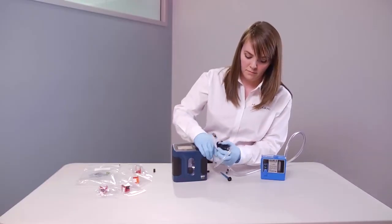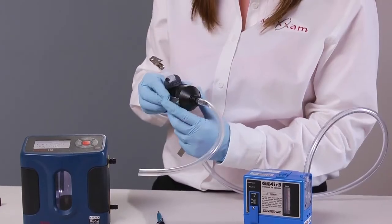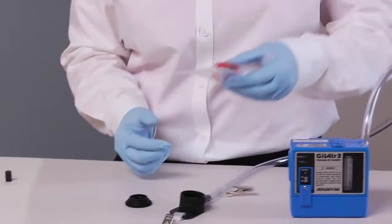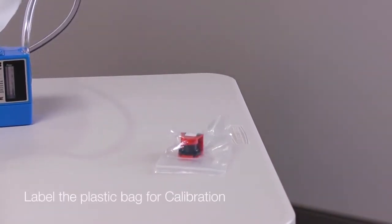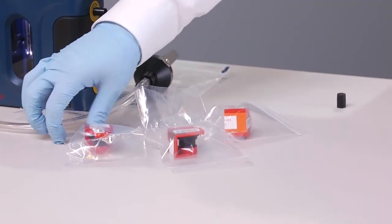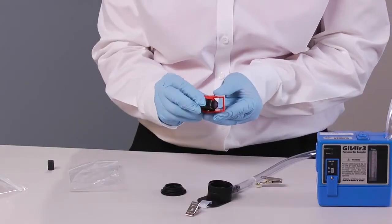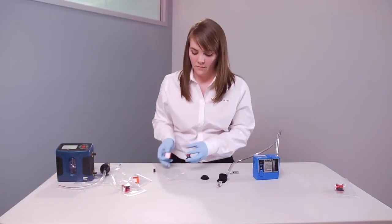Disconnect the IOM cassette and adapter and set it aside for post calibration. It is also good practice to label or mark the bag for the cassette for calibration. Install a new IOM cassette into an IOM sampler body and you can collect an air sample.